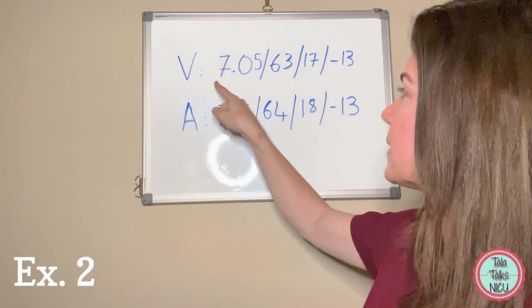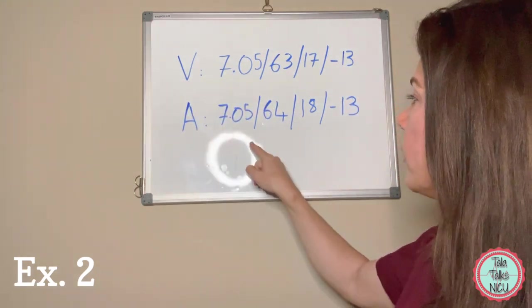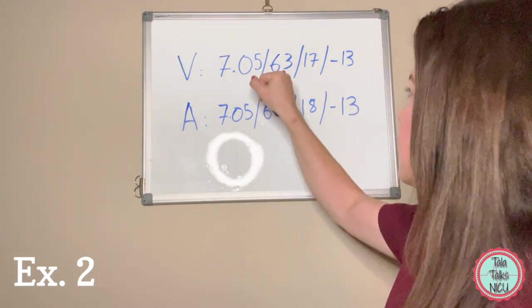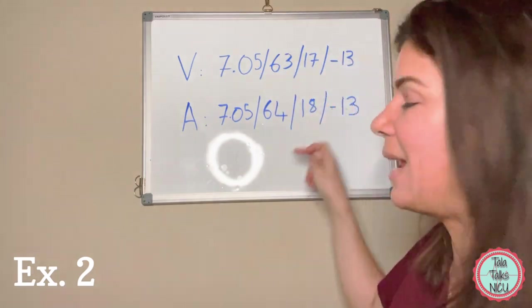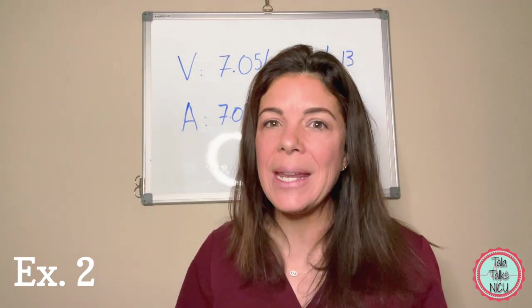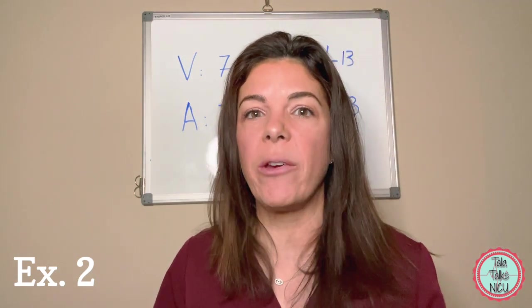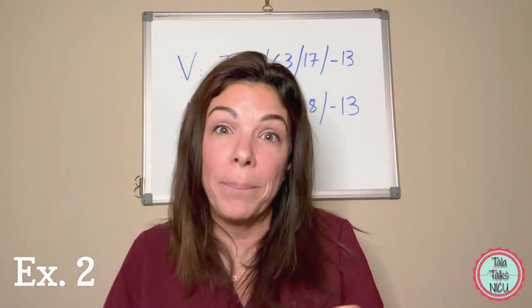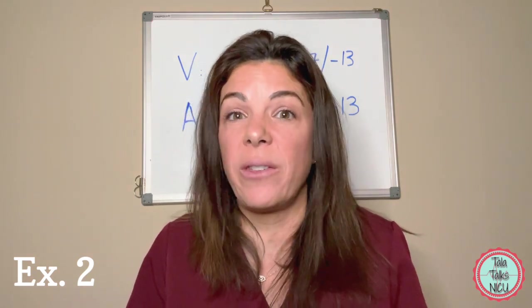Example number 2: what do we have going on here? Our venous gas is 7.05 with a minus 13, and arterial is 7.05 with a minus 13. You can see there are very slight differences in the CO2 and O2, 63 and 64, and 17 and 18. Just remember, anytime you sample anything in blood there's going to be some variability.